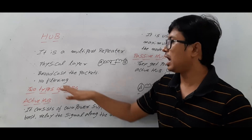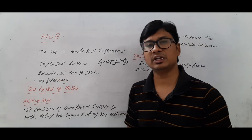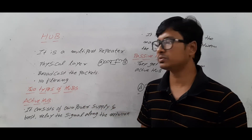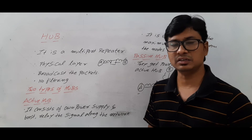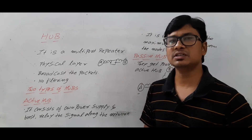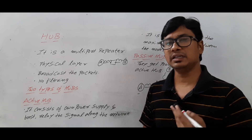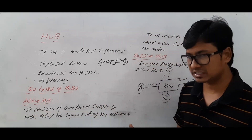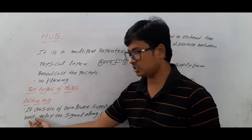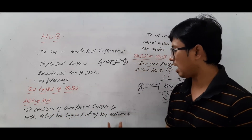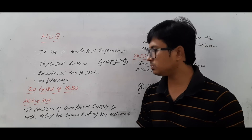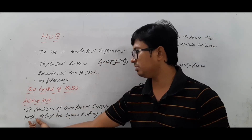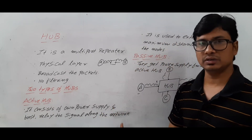Now let me discuss about the types of hubs. We have two types: one is the active hub and another is the passive hub. The active hub consists of its own power supply and can boost and relay the signal along the network. Because it is a multiport repeater, it has to relay the signal, and it even boosts the signal along the network — it will regenerate the signal.